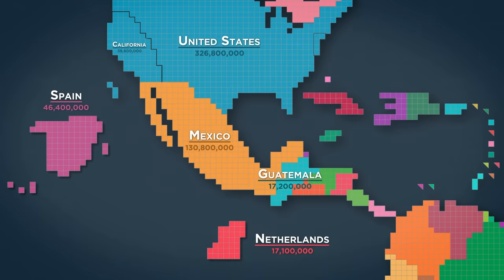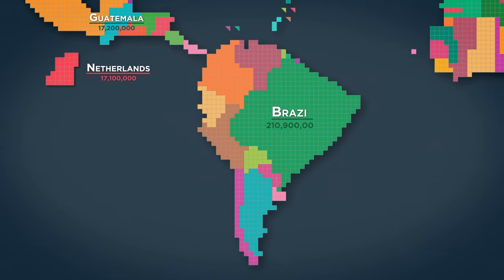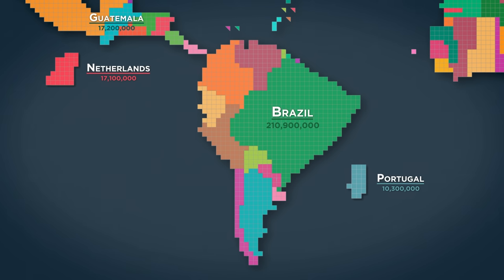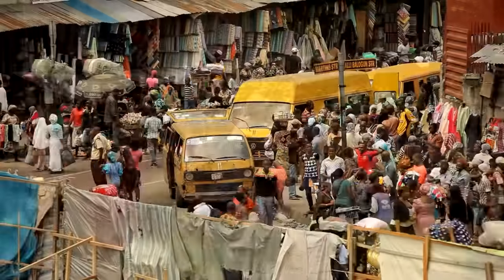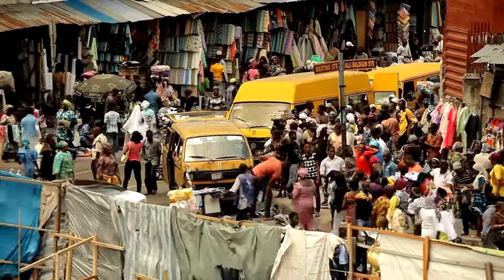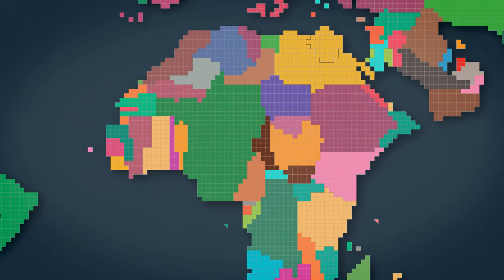Guatemala's population alone is roughly equivalent to the Netherlands, and combined, Central America's population is also greater than Spain's. Brazil is the Jupiter of the South American continent. Brazil's population is nearly the same as the rest of South America's population all combined. And while she began as a colony of Portugal, Brazil's population is now over 20 times larger than Portugal's. But even as huge as Brazil's population is when compared with the rest of South America, it's only the world's sixth and soon-to-be seventh largest. The country that will soon be overtaking Brazil is just across the Atlantic over in Africa.